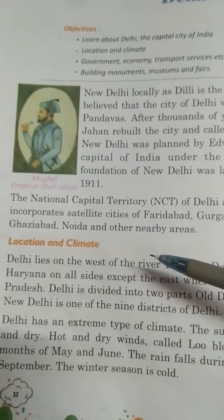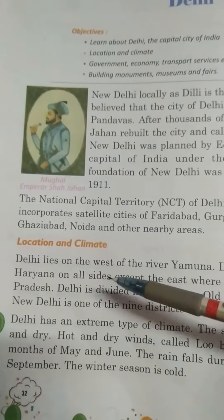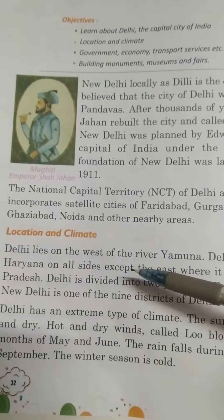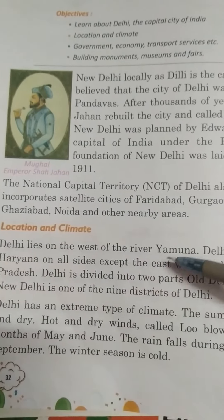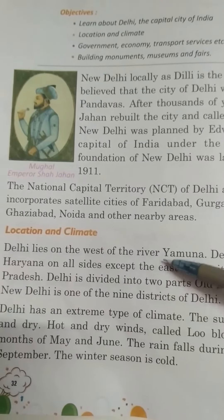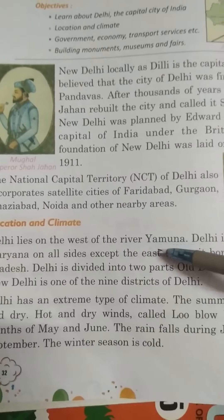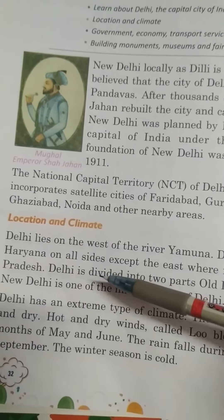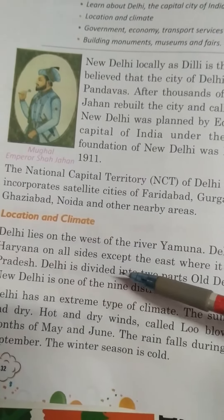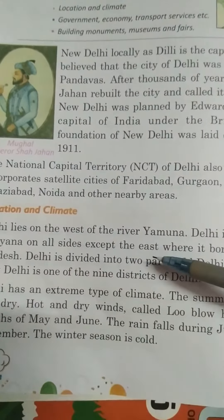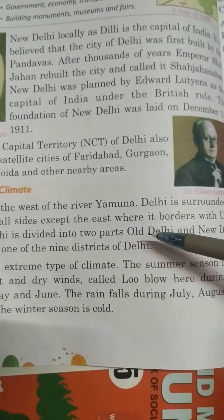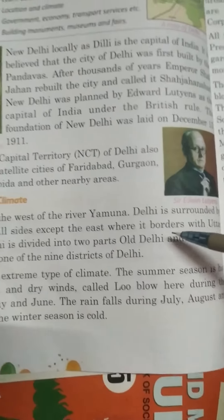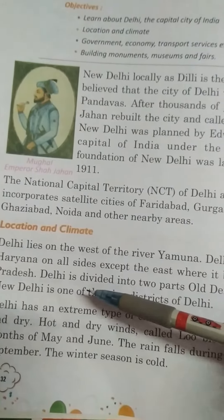Location and climate: Delhi lies on the west of the river Yamuna. Delhi is surrounded by Haryana on all sides, except the east where it borders with Uttar Pradesh.